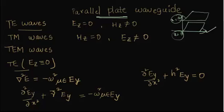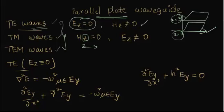Let us look at the different modes that a parallel plate waveguide can have. You can have transverse electric wave, transverse magnetic, and transverse electromagnetic. In transverse electric, the transverse electric field is zero and the transverse magnetic field exists. We consider the direction of propagation in the z direction. TM is with transverse magnetic field zero, and TEM is with Ez equal to zero and Hz equal to zero.